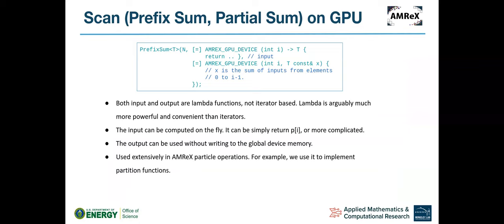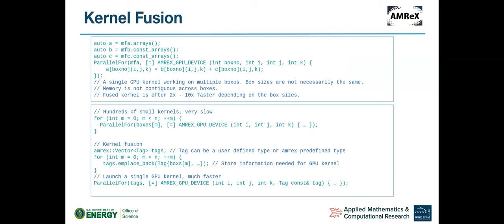And we also have a prefix sum function that works on GPU. And this, the interface is based on the user providing two lambda functions. And this is actually, it turns out for a lot of things you do on CPU, this prefix sum function may not be that important. But for a lot of GPU operations, it turns out to be actually extremely important. And we use it extensively in AMX particle code.